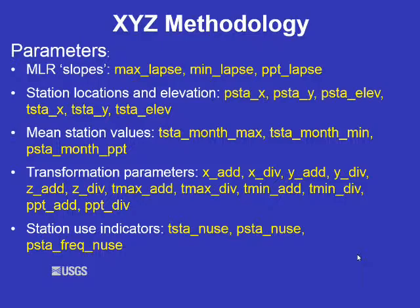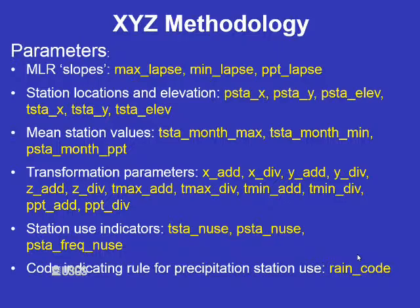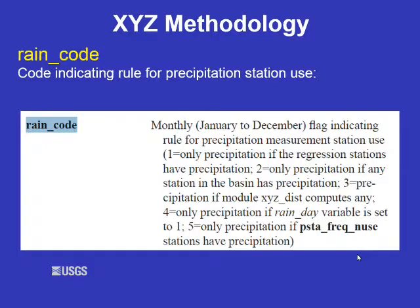The station use indicators tell PRMS which stations in your data file are to be used in the multiple linear regression. TSTAY_NUSE and PSTAY_NUSE are 0/1 indicators for station use. The PSTAY_FREAK_NUSE parameter indicates the set of stations to use to determine if there is precipitation that day. The RAIN_code is a monthly parameter that indicates the rule for precipitation station use. A RAIN_code of 01 means that PRMS calculates precipitation if at least one of the stations chosen with the PSTAY_NUSE parameter has precipitation on that day.